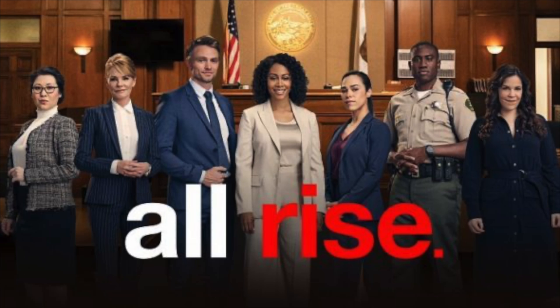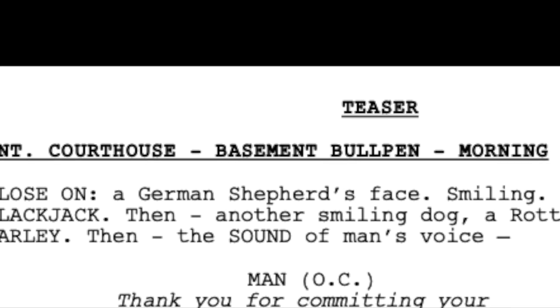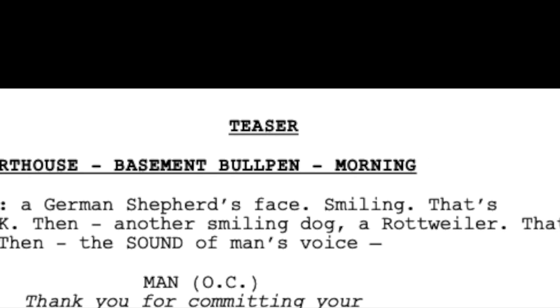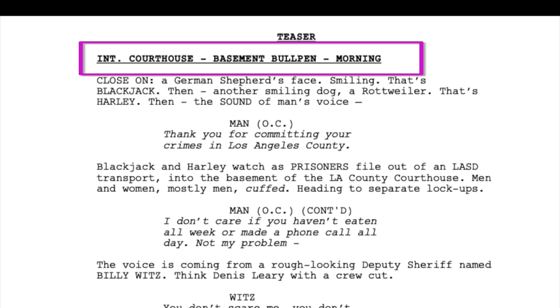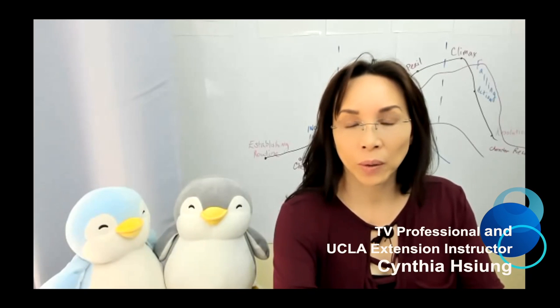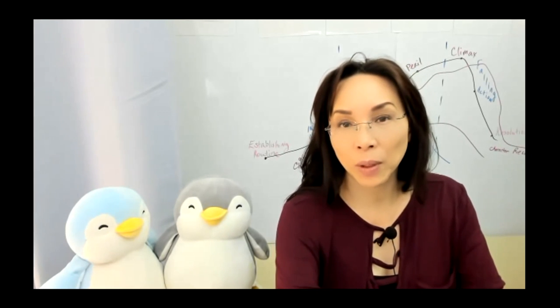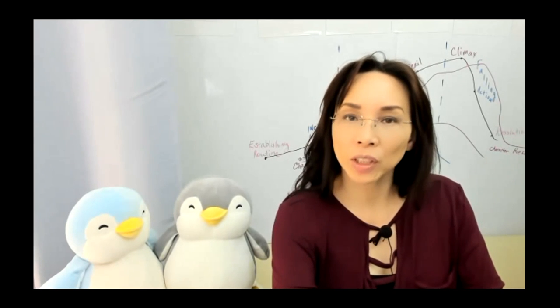This is just a sample screenplay from a television series called All Rise. And you'll see at the very top page, it says teaser. And then the very first line after that says interior, I-N-T stands for interior, courthouse, basement, bullpen, morning. Now this line is called the slug line. The slug line is the line that tells production pretty much what they need to know to get started. So the thing that's so different about a screenplay versus a novel or an essay or short story or any other written piece is that it not only tells a story, but it also acts as a manual, a production manual, a manual so that everyone on your production knows exactly what they're supposed to do, mostly just by reading the screenplay.